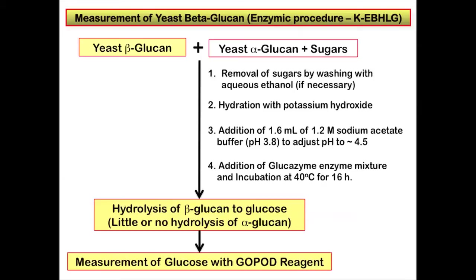The Megasyme enzymic procedure for the measurement of yeast beta-glucan is shown in this diagram. The yeast sample containing beta-glucan, alpha-glucan, and sugars is first washed with aqueous ethanol to remove sugars, if sugars are present in the sample.